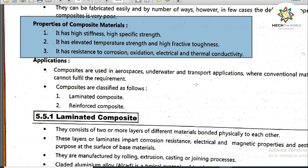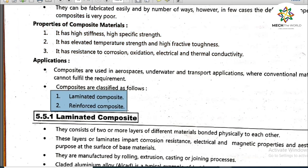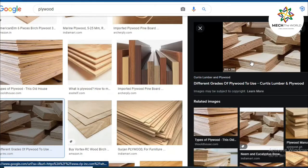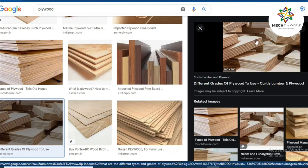Properties of composite materials include high stiffness, high specific strength, elevated temperature strength, high fracture toughness, and resistance to corrosion, oxidation, electrical, and thermal conductivity. These properties vary depending on the material selected. Applications include aerospace, underwater, and transport applications where conventional materials cannot fulfill the requirement. Composites are classified into two main categories: laminated composites and reinforced composites.